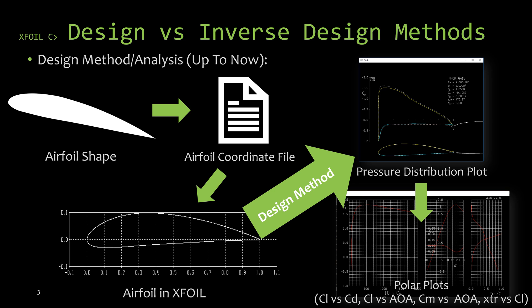Up until now, we've been doing what I prefer to call the analysis approach to X-Foil. What this means is that we started with an airfoil shape, turned that shape into an airfoil coordinate file, loaded it into X-Foil, and then looked at the performance it would have under certain flow conditions — specifying the Reynolds number or Mach number to define the flow conditions around that airfoil.